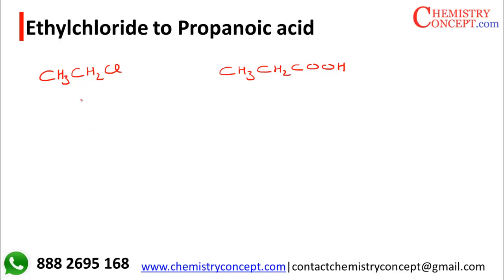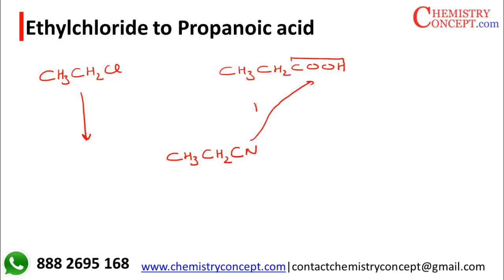So what we actually do in such reactions where we need an extra COOH — you can note this down as a trick: whenever we need an extra COOH, this can be done by introducing a cyanide group, because cyanides on hydrolysis produce carboxylic acid.